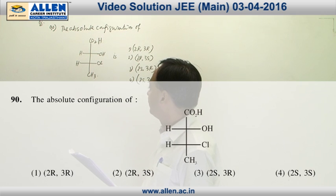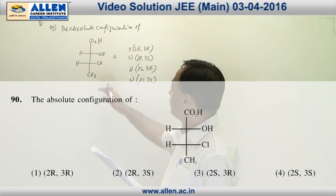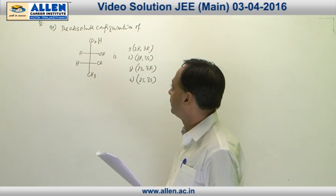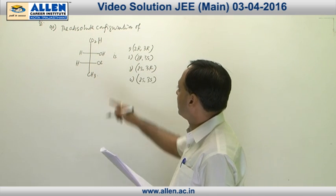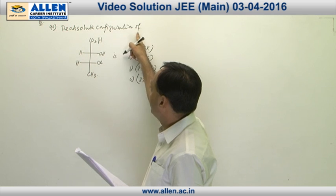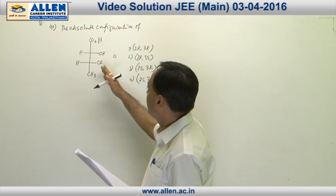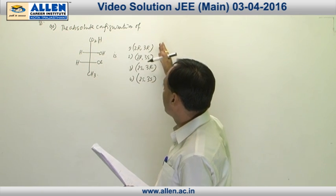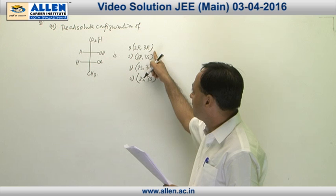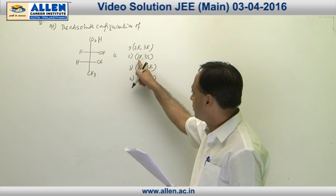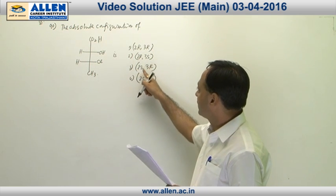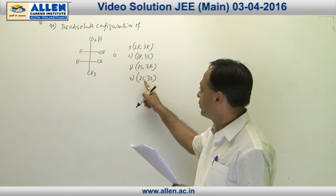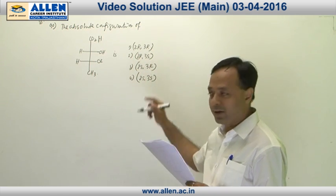Question number 90: for a compound whose Fischer projection is given, the absolute configuration of that particular compound is to be determined. Four options are given: first option 2R 3R, second option 2R 3S, third option 2S 3R, fourth option 2S and 3S.